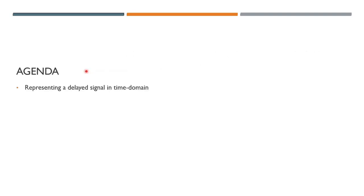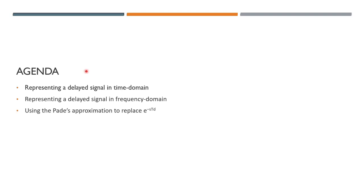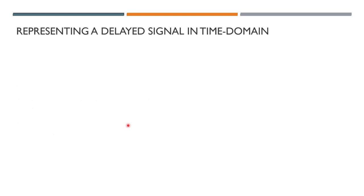This is the agenda of my presentation. We will start with representing a delayed signal in the time domain, then move to the same representation in the frequency domain. Later I'm going to use the Padé approximations to replace e to the power of minus std, then discuss what value to use in the constant td, which represents the time delay, and finally give a few final considerations.